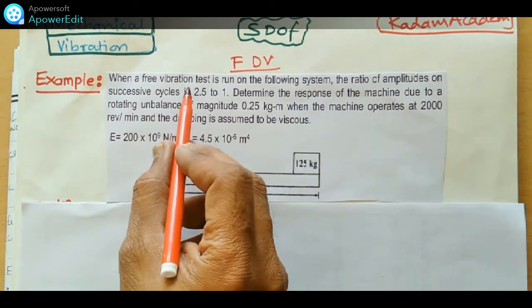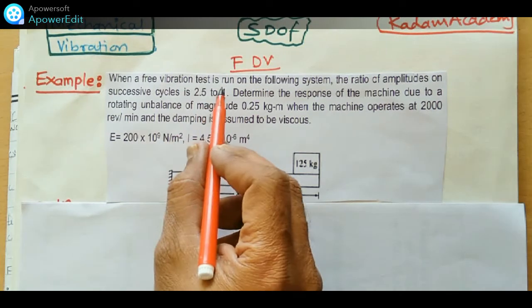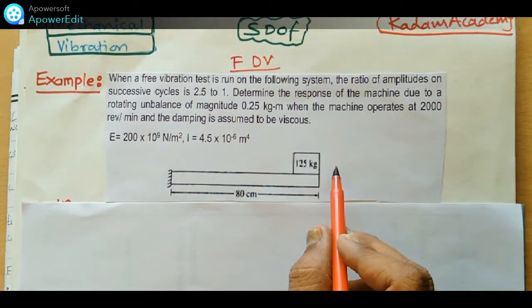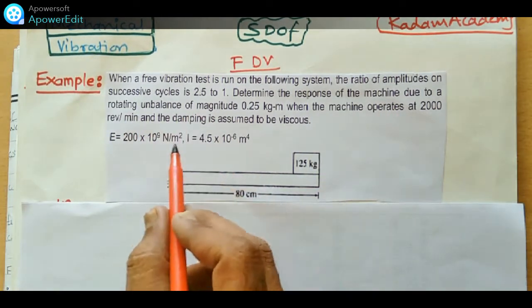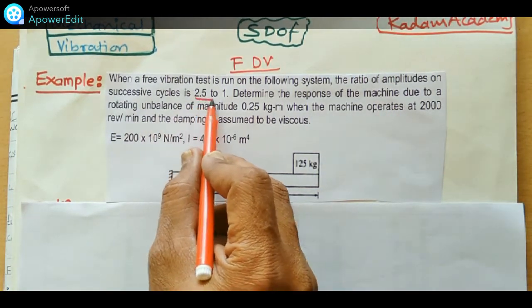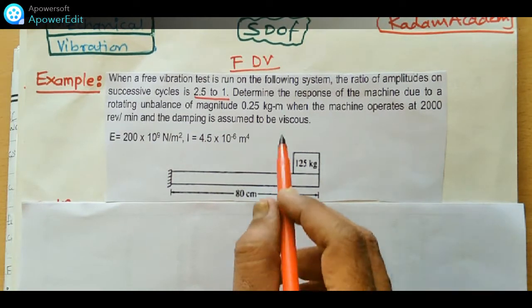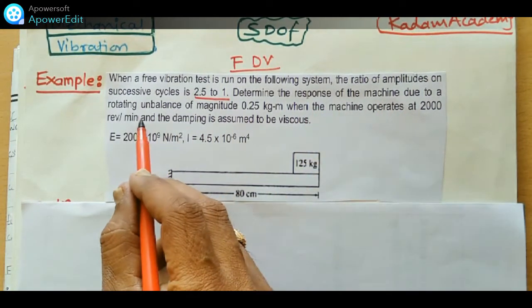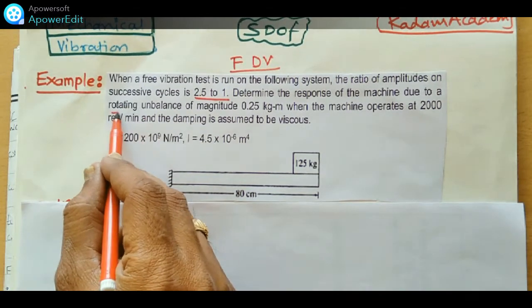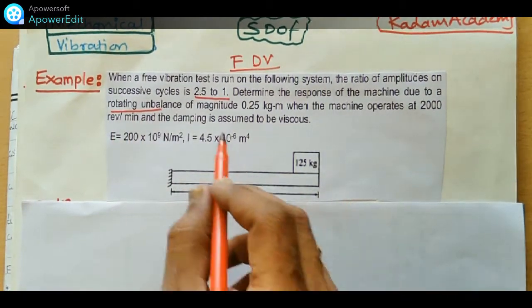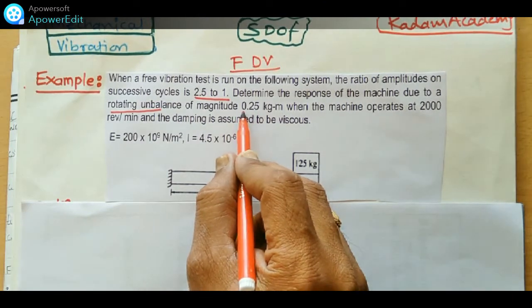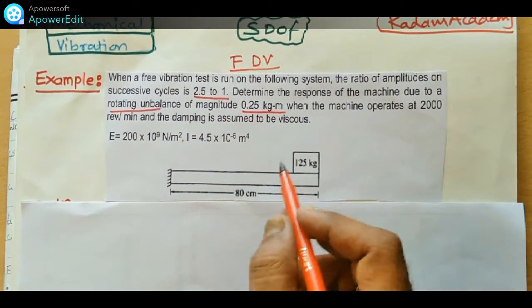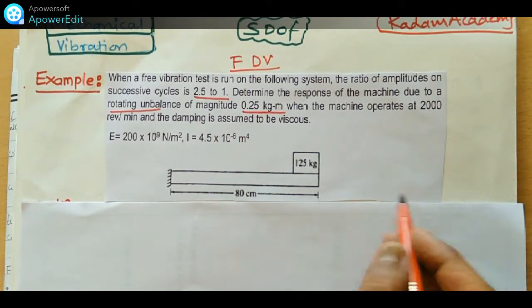The problem statement: when a free vibration test is run on this system, the ratio of amplitudes on successive cycles is 2.5 to 1. We need to determine the response of the machine due to a rotating unbalance of magnitude 0.25 kg·m.